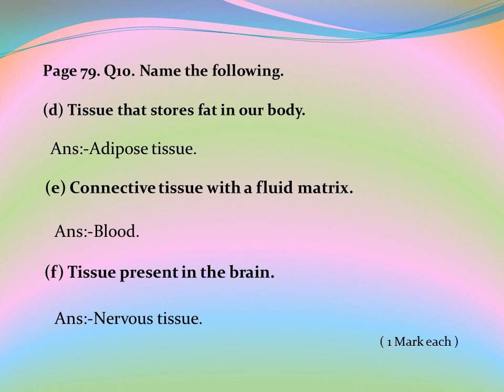Page 79, Question 10 (continued): D. Tissue that stores fat in our body — Answer: adipose tissue. E. Connective tissue with a fluid matrix — Answer: blood. F. Tissue present in the brain — Answer: nervous tissue.